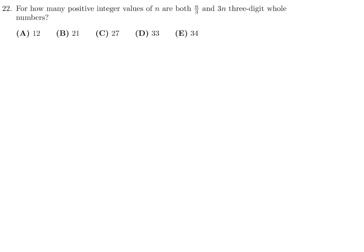For how many positive integer values of n are both n over 3 and 3n three-digit whole numbers? Okay. First, let's just talk about n over 3. n over 3 has to be a three-digit number, right? What are our minimum and maximum three-digit numbers? Well, they're 100 and 999. So if n over 3 is equal to 100, which is the minimum, that means n is 300.